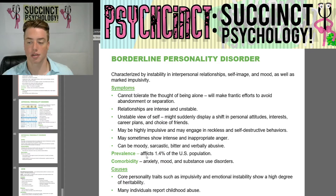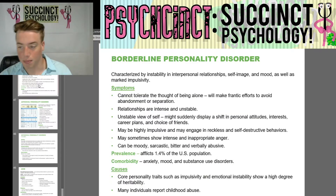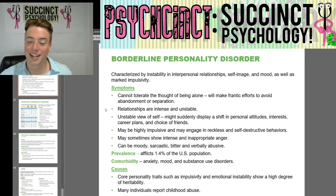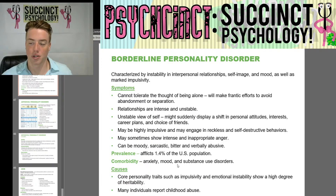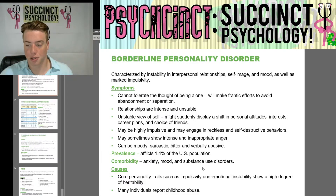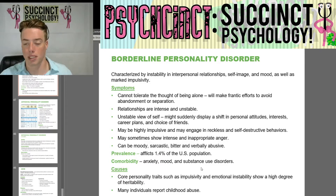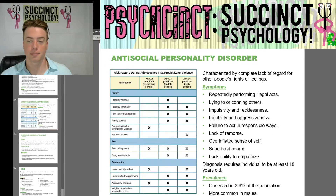Prevalence of borderline personality disorder affects 1.4% of the U.S. population. Comorbidities include anxiety, mood, and substance use disorders. Causes include core personality traits such as impulsivity and emotional instability, which show a high degree of heritability, and many individuals report a history of childhood abuse.